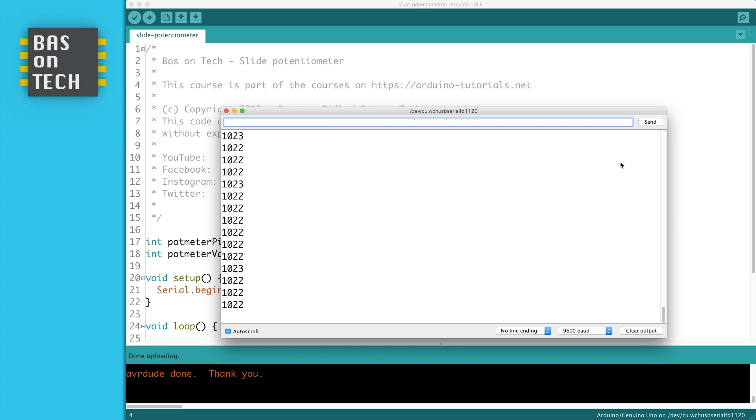You see it's a little bit about 1022, 1023. The thing is, if you remember, this sliding potentiometer is actually a resistor. So these outer values aren't completely exactly 5 volts. It's about 4.99 or something. So don't trust it too much on these outer values.